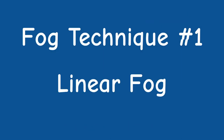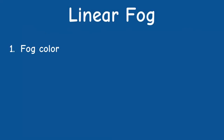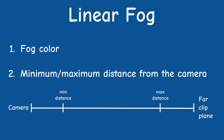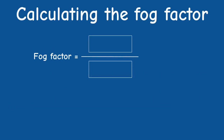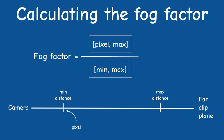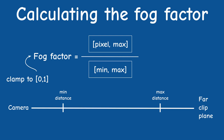We will calculate a fog factor and perform linear interpolation between the two colors. When the fog factor is 1 there is no fog effect, so we get the pixel color, and as the factor decreases toward zero the color of the fog takes over. The simplest type is linear fog, defined by a minimum and maximum distance from the camera. Pixels closer than the minimum have their regular color; pixels beyond the maximum get the fog color. Everything in between is linearly interpolated. The fog factor is a fraction where the denominator is the range between min and max distance, and the numerator is the delta from the pixel to the maximum distance. We clamp the factor to 0–1 to satisfy the requirement of no fog below minimum and only fog above maximum distance.